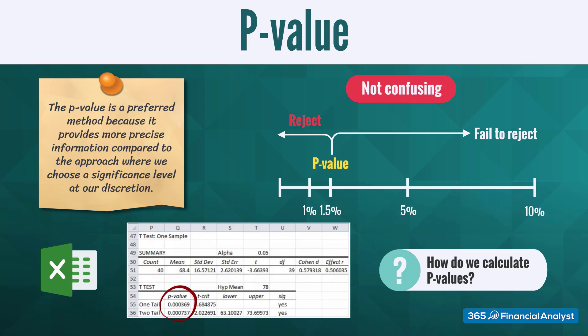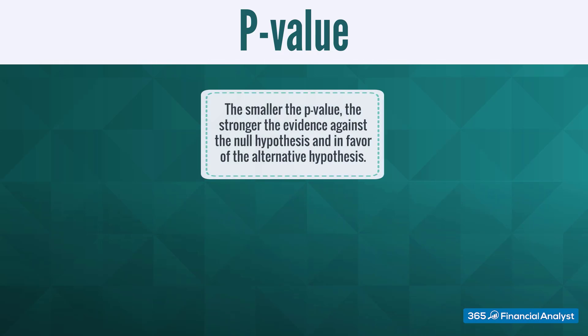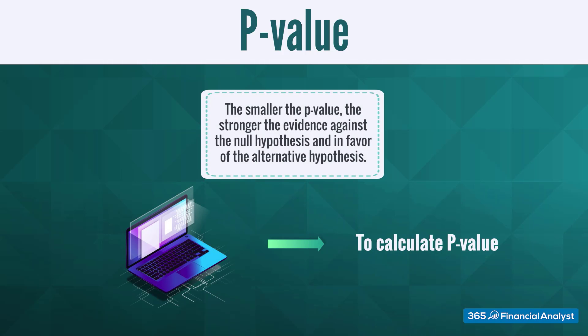Generally, software programs are designed to calculate the p-value to the third digit after the separator. When you start conducting your own research, you would love to see three zeros after the dot. The closer to zero your p-value is, the more significant the result you've obtained. In other words, the smaller the p-value, the stronger the evidence against the null hypothesis and in favor of the alternative hypothesis.